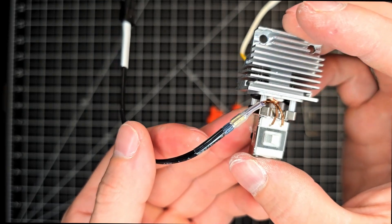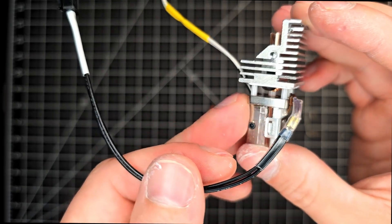At this point, grab the grub screw and secure the heat brake from the back portion of the heat sink.